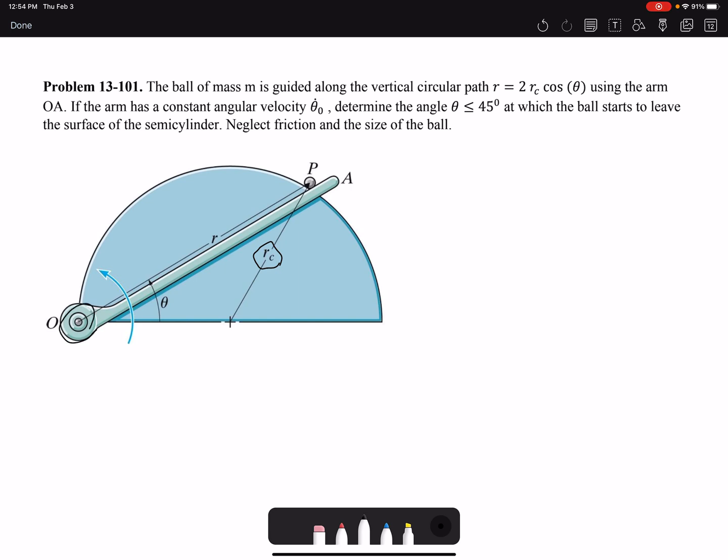If this hinge was in the middle, we could easily use normal and tangential components, but here we have to use polar coordinates because R is changing.